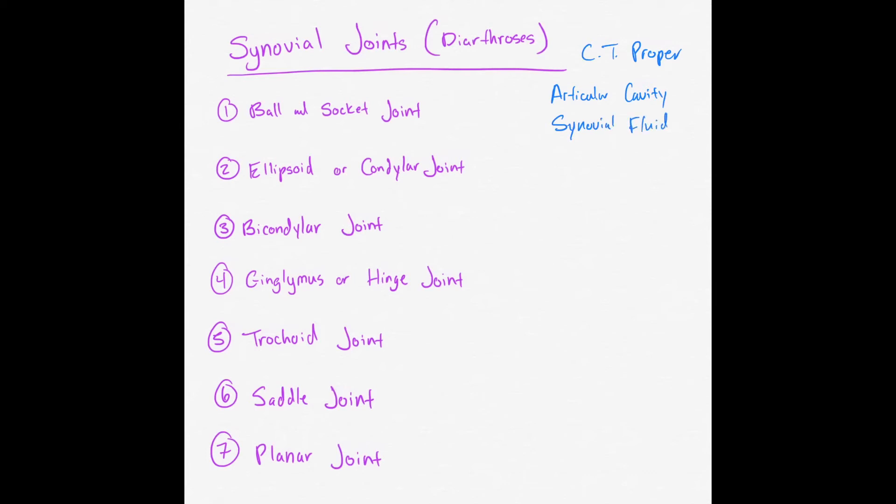The synovial fluid provides nourishment to the joint as well as lubrication because these joints are the most mobile. They're the ones that have the most range of motion. There are seven subtypes of these synovial joints, and they're listed below.